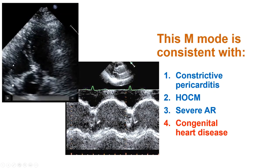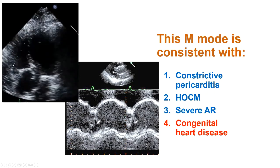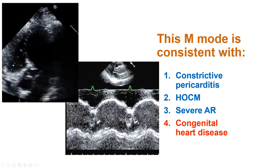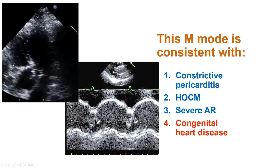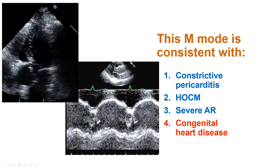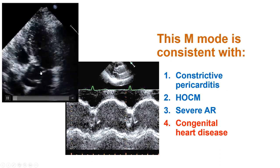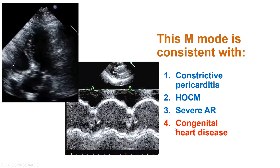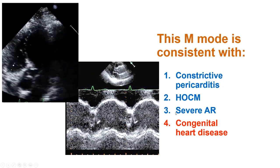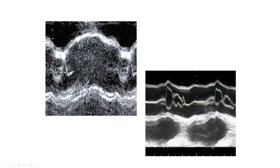Here's another M-mode: a two-dimensional echocardiogram with a specific aortic valve envelope. The answer here is congenital heart disease — this is the aortic valve envelope seen with a fixed subvalvular membrane (subaortic membrane). This is to be contrasted with dynamic outflow tract obstruction as seen in HCM. With the subaortic membrane, the opening and closing tends to be very early, before the main aortic valve envelope, whereas with dynamic obstruction the closure is in the mid-portion of systole.